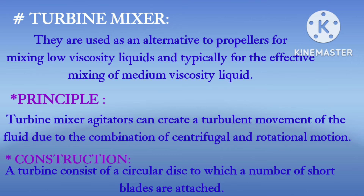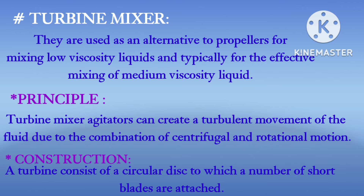The second topic in this chapter is the turbine mixer. The turbine mixer is another type of process agitator, used as an alternative to propellers for mixing low viscosity liquids, and typically used for effective mixing of medium viscosity liquids. The turbine mixer creates turbulent movement of fluids due to the combination of centrifugal and rotational motion, causing effective mixing of low to medium viscosity fluids.